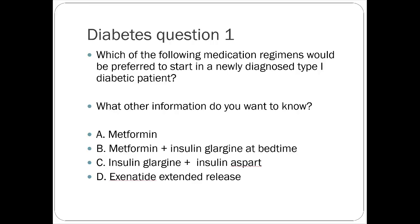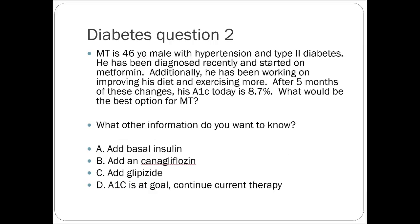Option D is a GLP-1 agonist — Type 2 management only. So C is the correct answer: glargine as your basal and aspart as your mealtime insulin. The option containing metformin would also be incorrect — there's no reason to give metformin to a Type 1 patient.